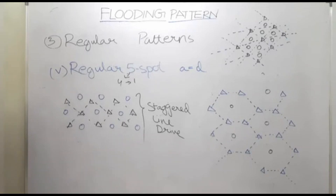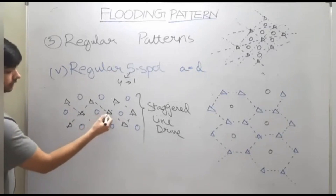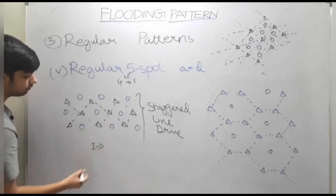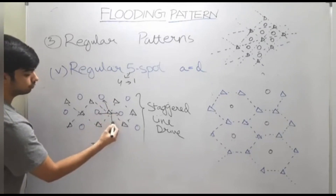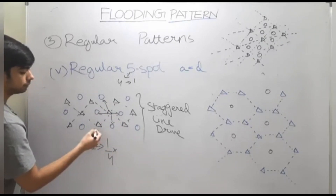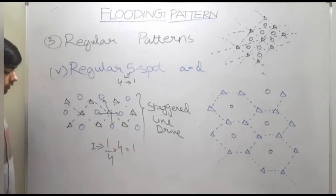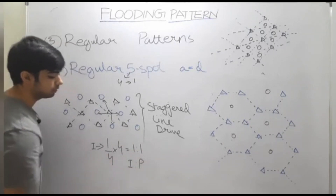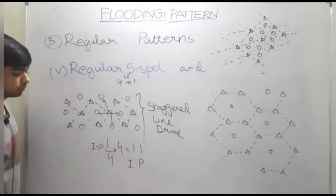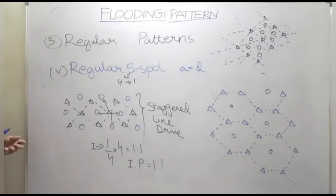If we take one unit and consider one injector well, it is injecting water into four different wells. One specific unit has four injector wells. So the injector-to-producer ratio — the number of injector wells to the number of producer wells — is one-to-one; the numbers are the same.